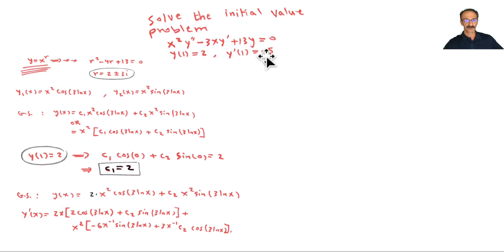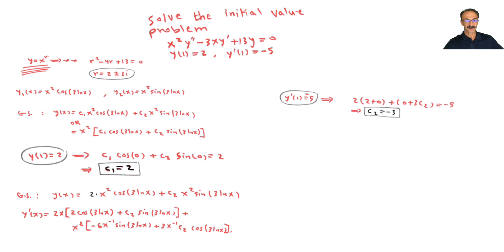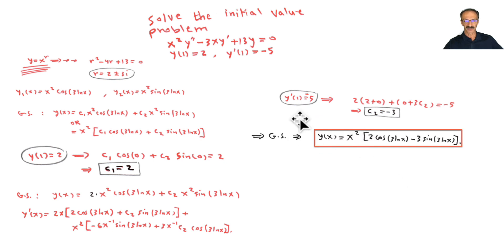With c₁ = 2, we now need to find y' from the general solution — it's a lengthy expression. Applying y'(1) = -5 and simplifying the algebra steps, we find c₂ = -3. The final solution has c₁ = 2 and c₂ = -3 substituted in.